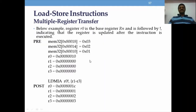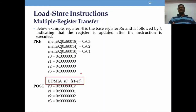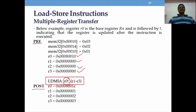Now look at one example of LDMIA — load multiple increment after. Look carefully at the state before and after execution — pre and post. The initial content of r0, r1, r2, r3 are shown. R0 is used as a pointer with the writeback symbol, meaning it should update the pointer.